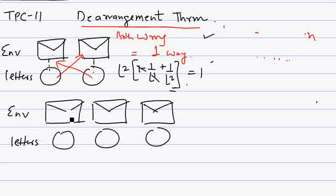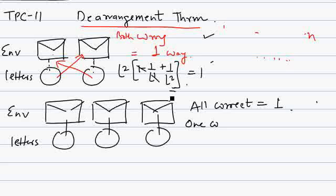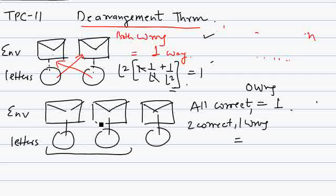Now let's take an example of 3 objects — 3 letters and 3 envelopes. Number of ways to place all correct: if you have to place 3 letters in 3 envelopes so that all 3 go to their corresponding envelopes, the answer is 1. For 2 correct and 1 wrong: if 2 letters are placed in their corresponding envelopes, the 1 remaining letter cannot go into a wrong envelope because the only leftover envelope is its correct one. So 1 wrong is not possible.